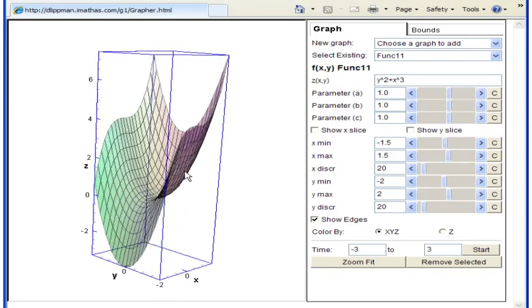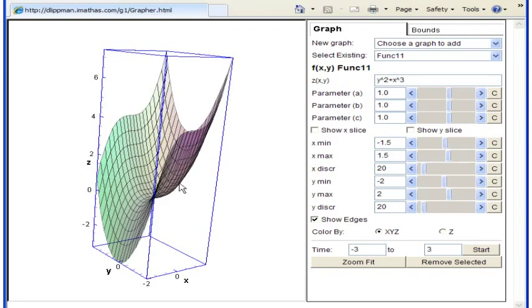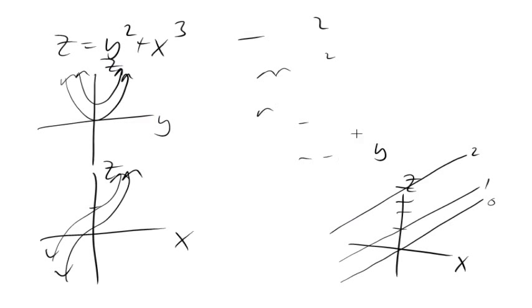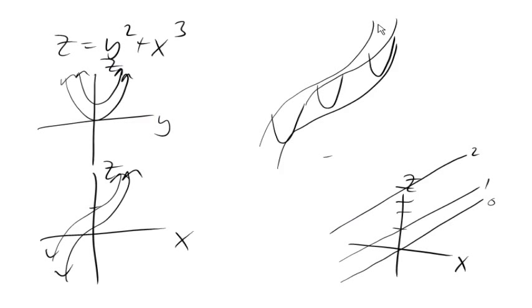I mean, if we wanted to try to graph this by hand, you could actually imagine trying to sketch in, you can sort of imagine sketching a cubic and then trying to draw in parabolas being shifted by those cubics. That's not very good. But, so it sort of gives us a parabolic slide in a cubic shape there.